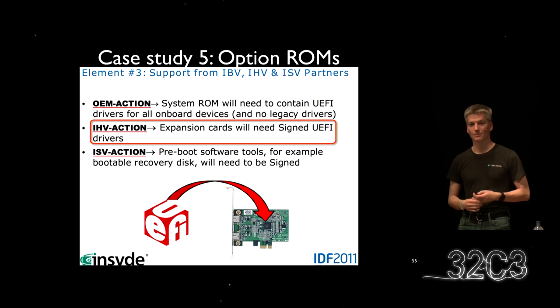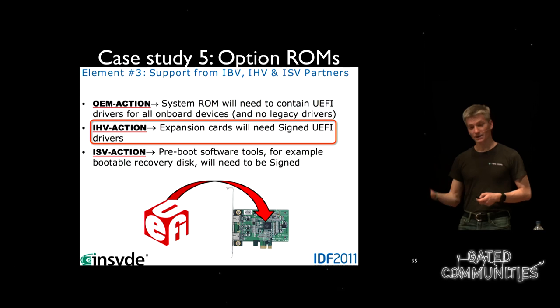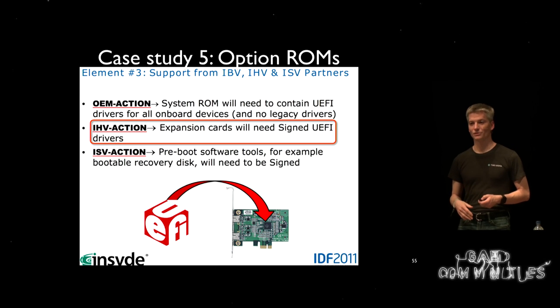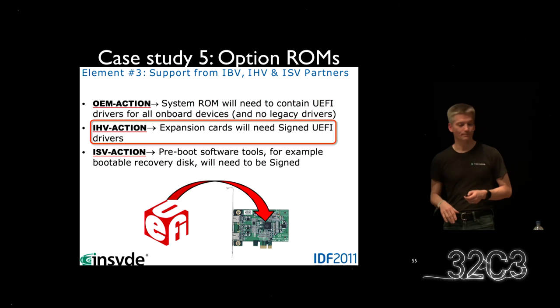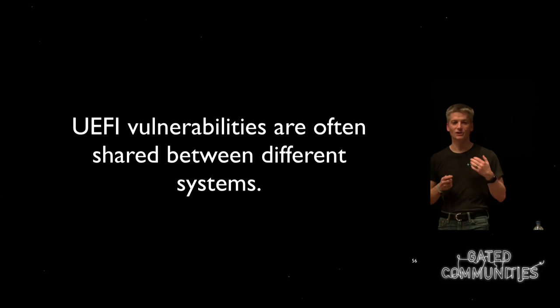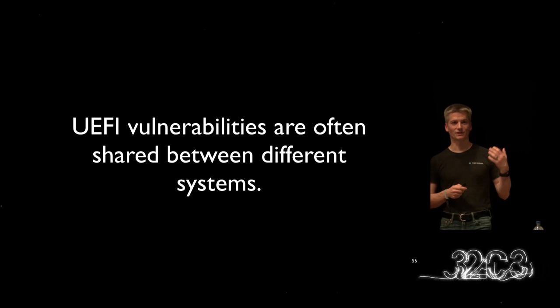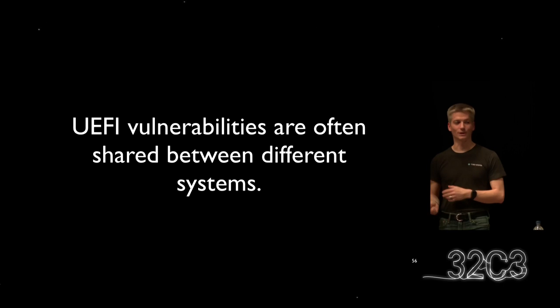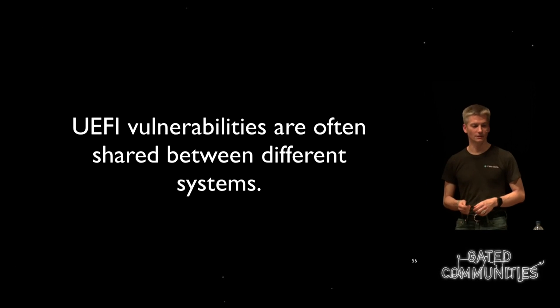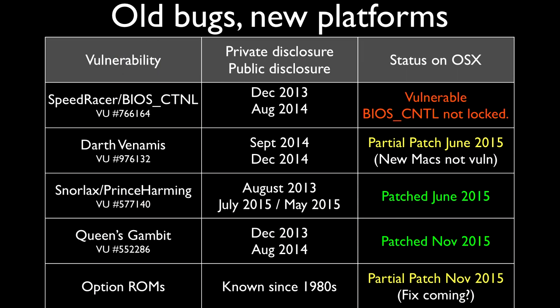Secure boot also won't help if someone gets the ability to write to the firmware flash on the motherboard. The key point is these are all cross-platform vulnerabilities found on commodity PCs that we were able to port to the Mac platform. Most of them are patched at this point by Apple. I've heard that the new iMacs are no longer loading option ROMs, which is great. USB-C doesn't have option ROMs yet, but maybe Thunderbolt 3 will bring option ROMs to USB-C — we'll see.